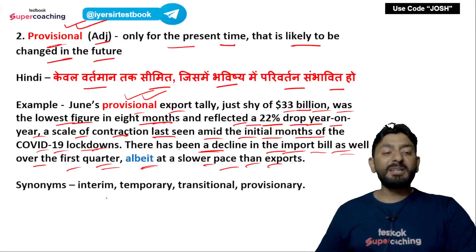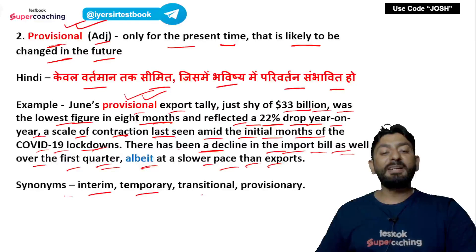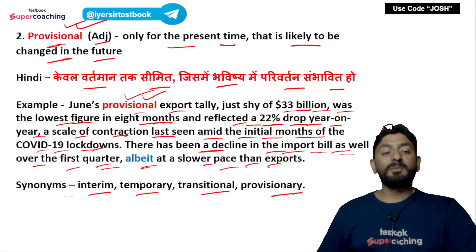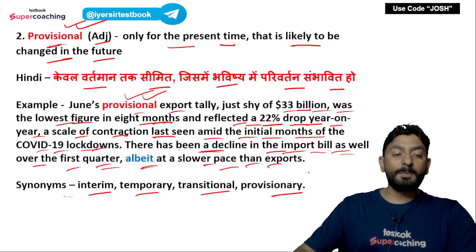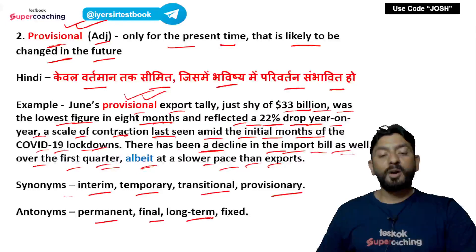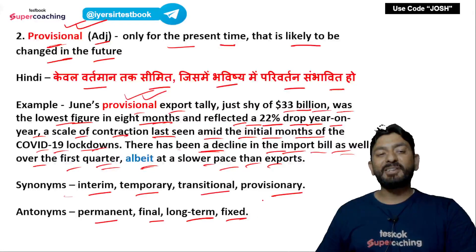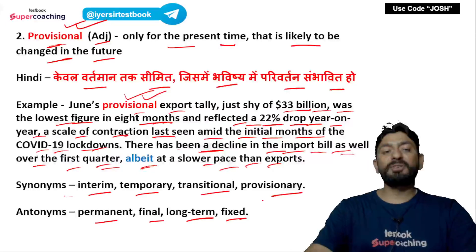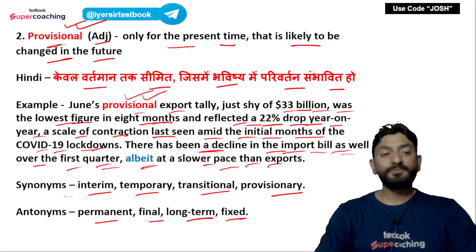Synonyms of 'provisional': interim, temporary, transitional — meaning for the time being, not permanent. Antonyms: permanent, final, long-term, fixed, binding — यह सब provisional के antonyms हो सकते हैं.